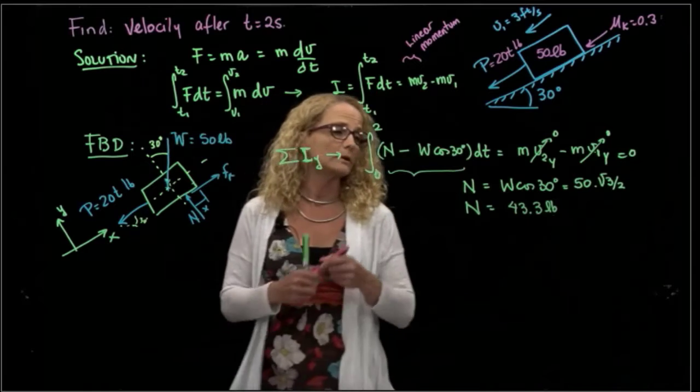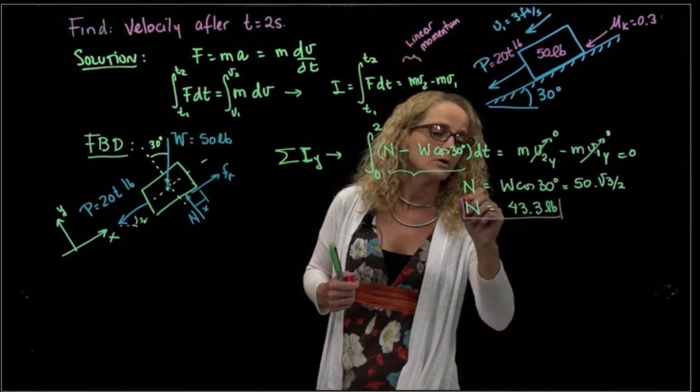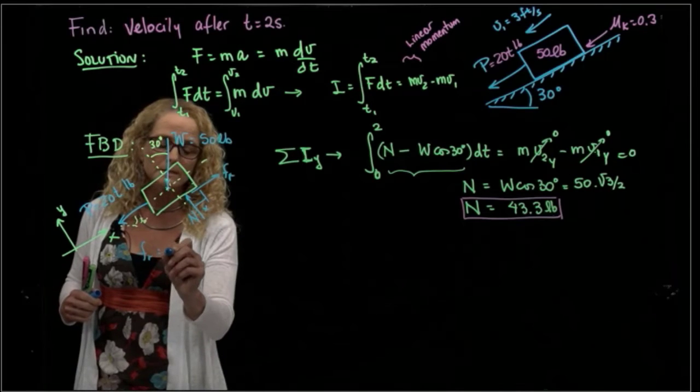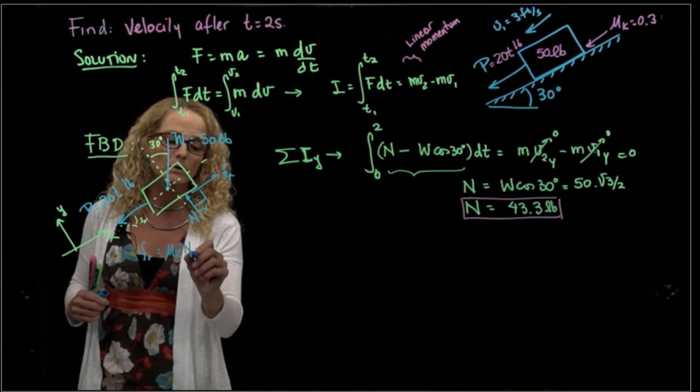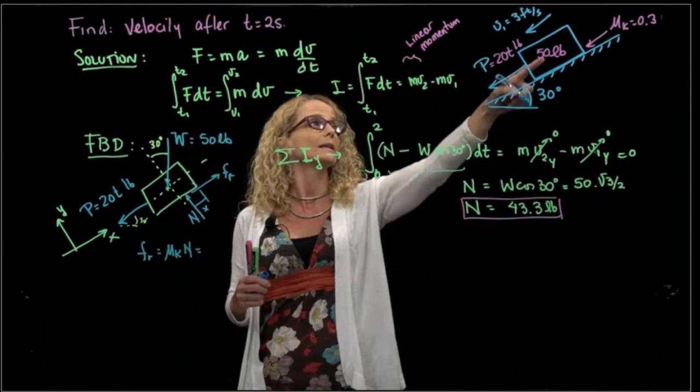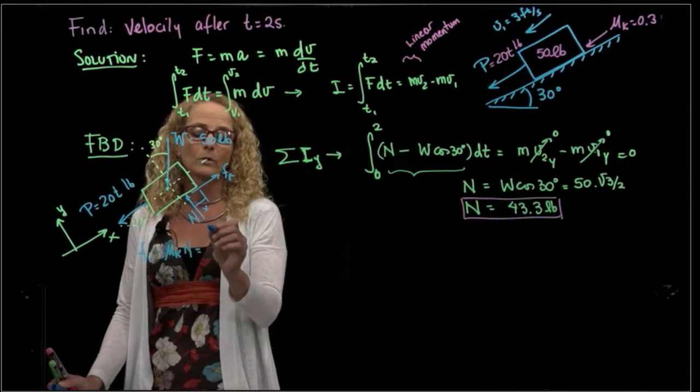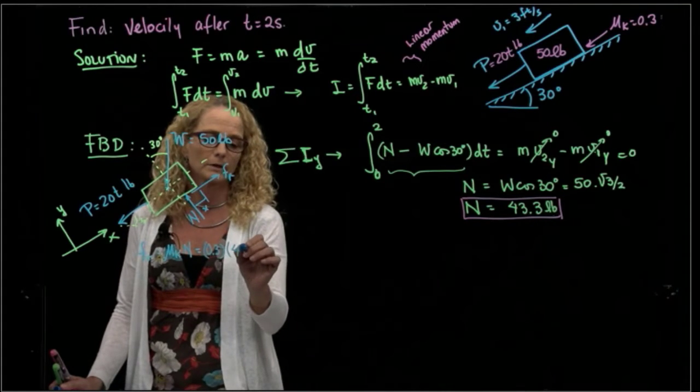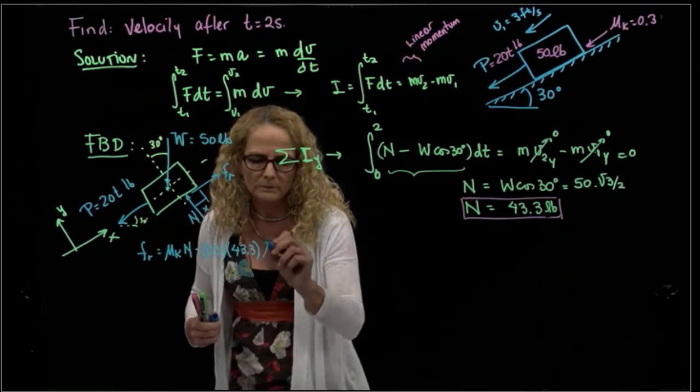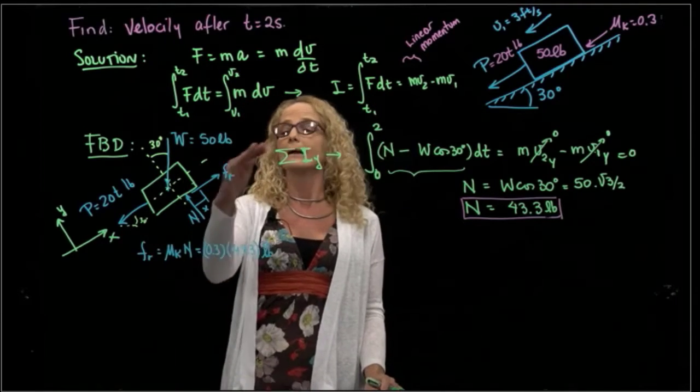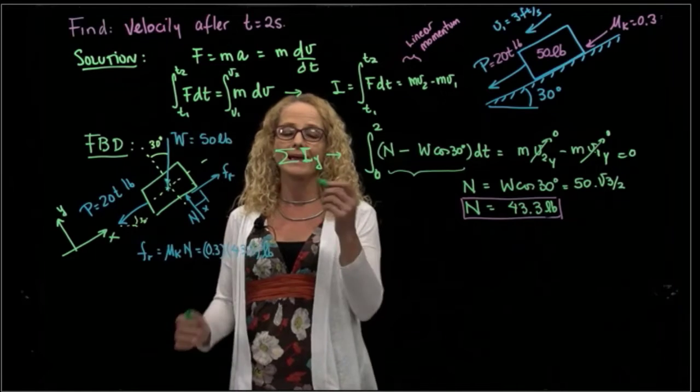Why do I need that? Because, as we know, my friction force is equal to the kinetic coefficient times the normal. Since I already know the normal, which is 43.3, and the kinetic coefficient is 0.3 times 43.3 pounds. So we have our friction force, we can add impulse in my X direction.